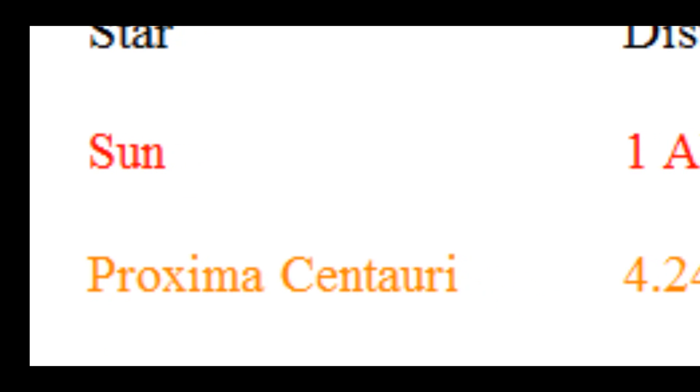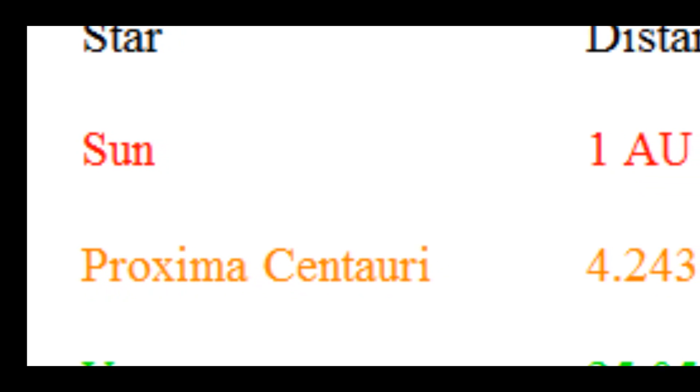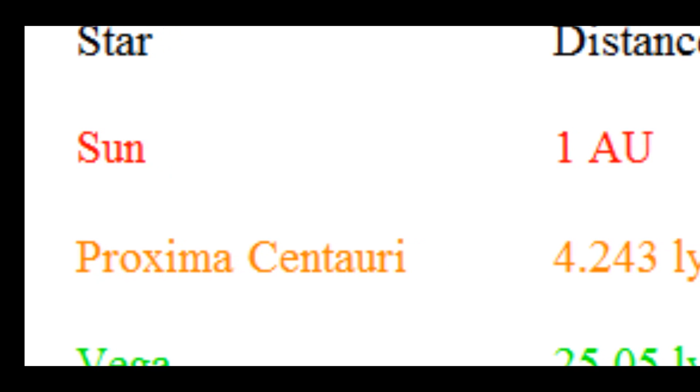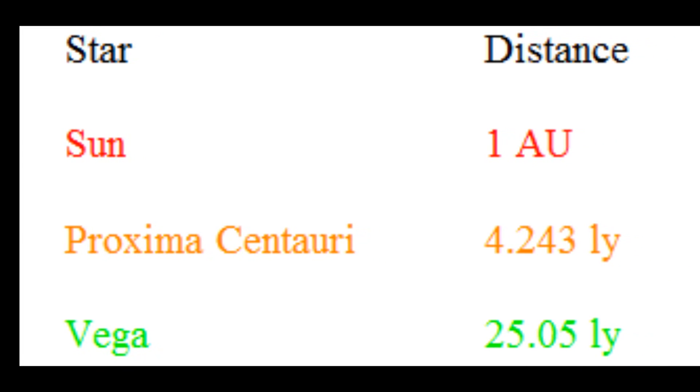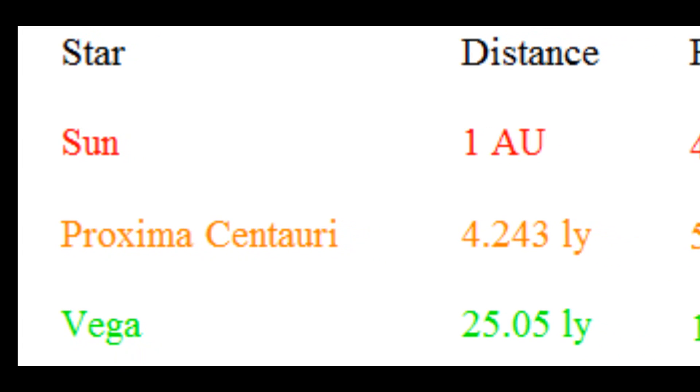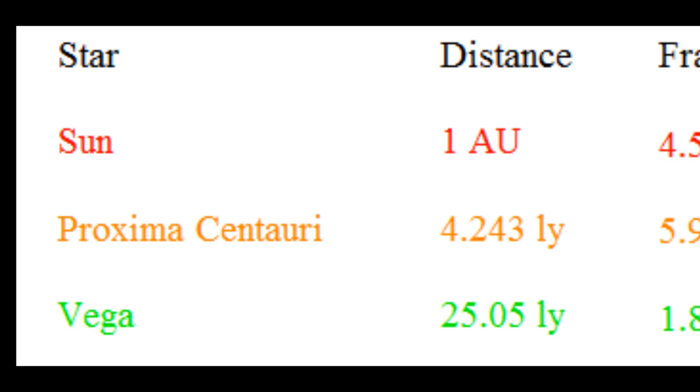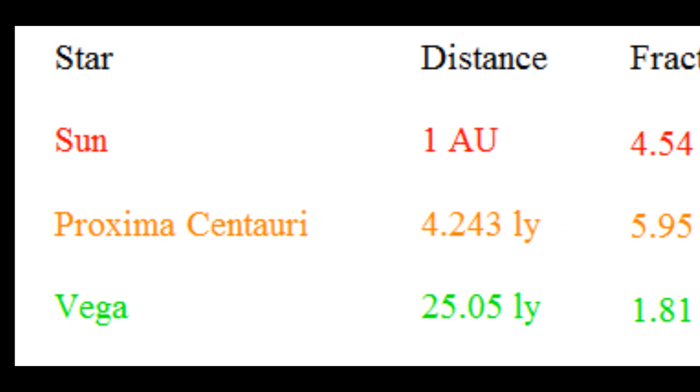For Vega, which is 25.05 light years away, this ratio is 1.81 times 10 to the negative 22. For Betelgeuse, which is 642.5 light years away, this ratio is 2.75 times 10 to the negative 25.